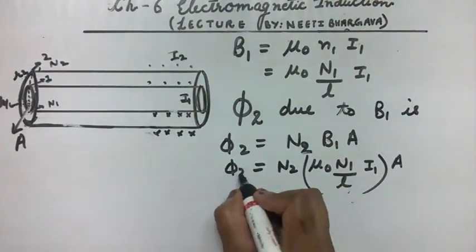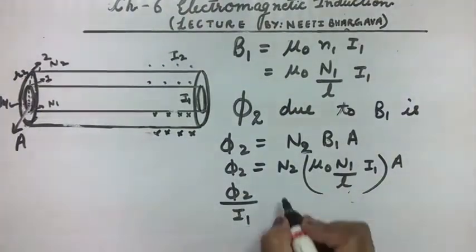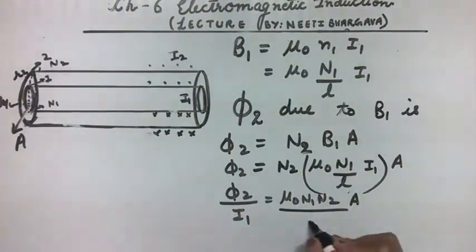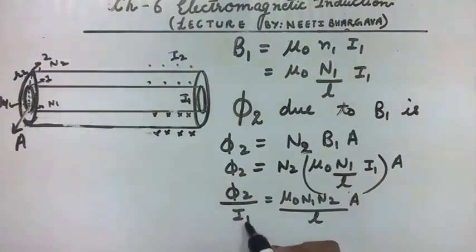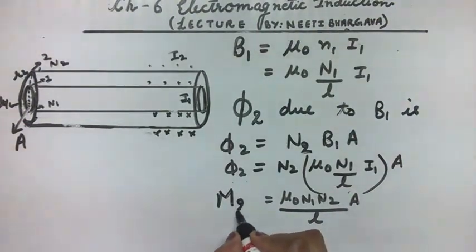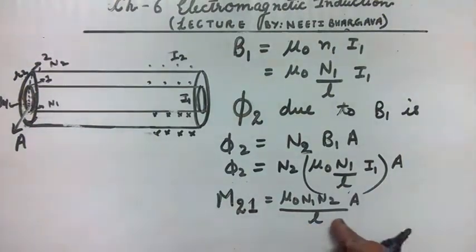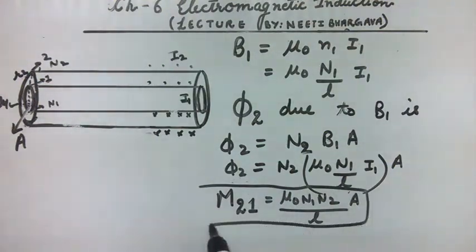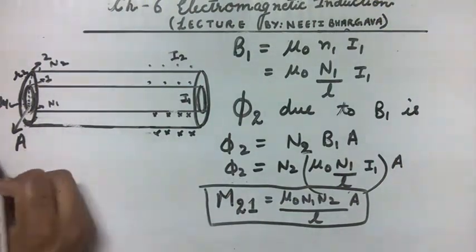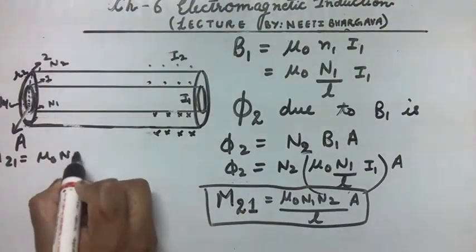Substituting the value of B₁, we get phi₂ = μ₀ · (N₁/l) · I₁ · A. Therefore phi₂/I₁ = μ₀ · N₁ · N₂ · A / l. Since phi₂/I₁ is the mutual inductance of coil 2 with respect to coil 1, we have M₂₁ = μ₀ · N₁ · N₂ · A / l.